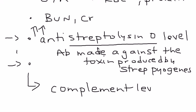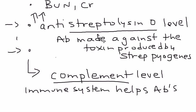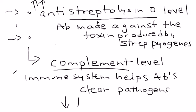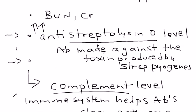Another specific test is the complement level. The complement system is part of the immune system that helps antibodies clear pathogens. In post-strep GN, complement levels are decreased — this is a very important part of the diagnostic workup. If necessary, although rarely done, a kidney biopsy can also be performed.